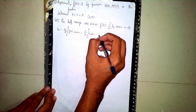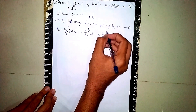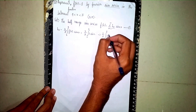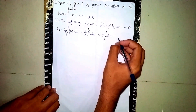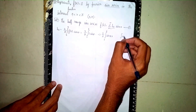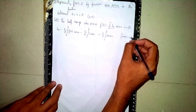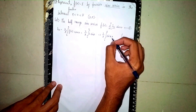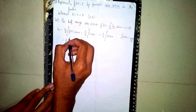So we integrate (2/π) from 0 to π of sin(nx) dx. Now, recall that the integral of sin(ax) is equal to minus cos(ax) divided by a. So instead of a, we have n here.